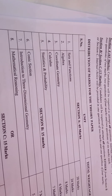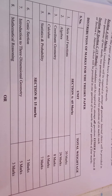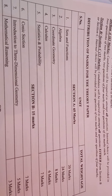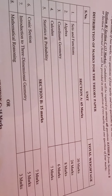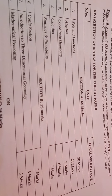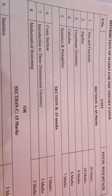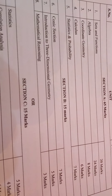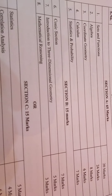The distribution of marks: Section A's 65 marks covers - sets and functions for 20 marks, algebra for 24 marks, coordinate geometry for 8 marks, calculus for 6 marks, and statistics and probability for 7 marks. Section B is for 15 marks: the 6th chapter conic sections for 7 marks, 7th chapter introduction to 3D for 5 marks, and 8th chapter mathematical reasoning for 3 marks.